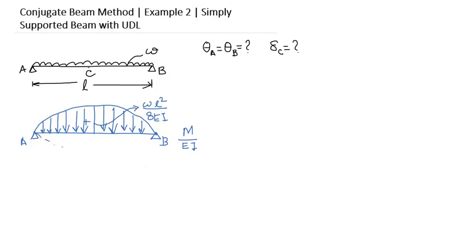This is the deflected shape of the beam. You have to determine this angle theta A, this angle theta B, slope at A and B, and this deflection which is maximum at the midpoint delta C.